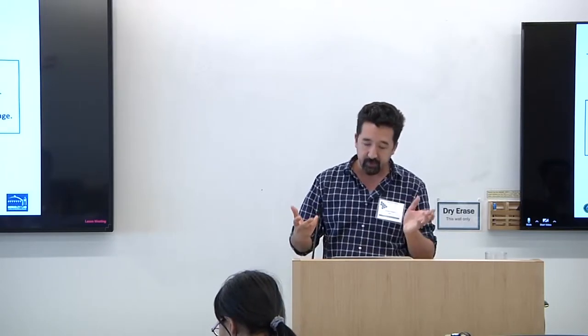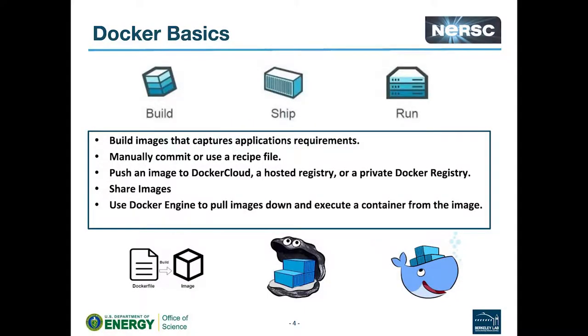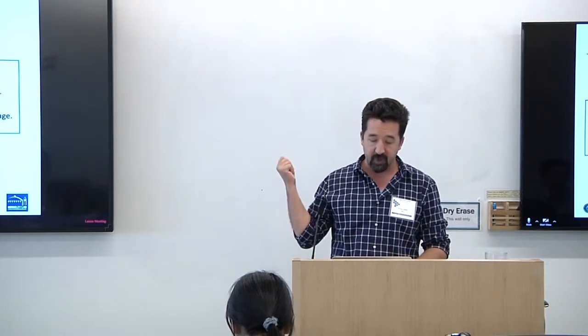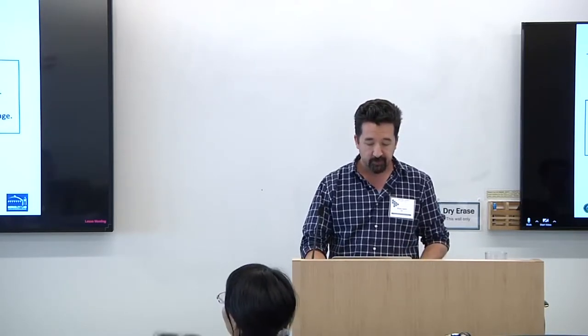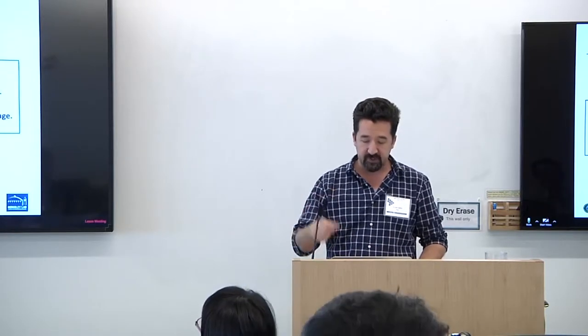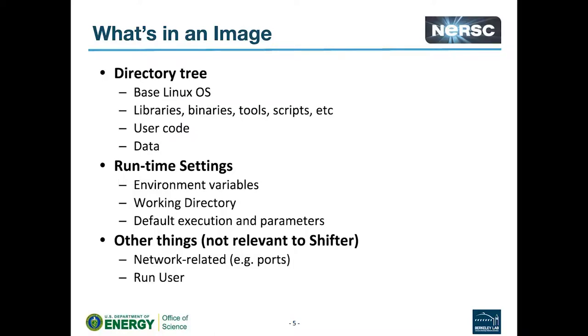Build images capture your applications and everything they depend on. You can create a Dockerfile that automates the build process. You can push images to different registries — Docker cloud, a hosted registry, or your own private registry. You can share images with other users, pull down images, and execute them. They bottle up all the dependencies, all the software and libraries you need to run an application.